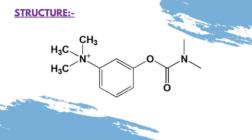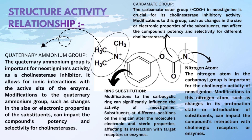This is the structure of Neostigmine. Here we see the structure-activity relationship of Neostigmine. The quaternary ammonium group is important for Neostigmine activity as a cholinesterase inhibitor. It allows for ionic interaction with the active site of the enzyme.